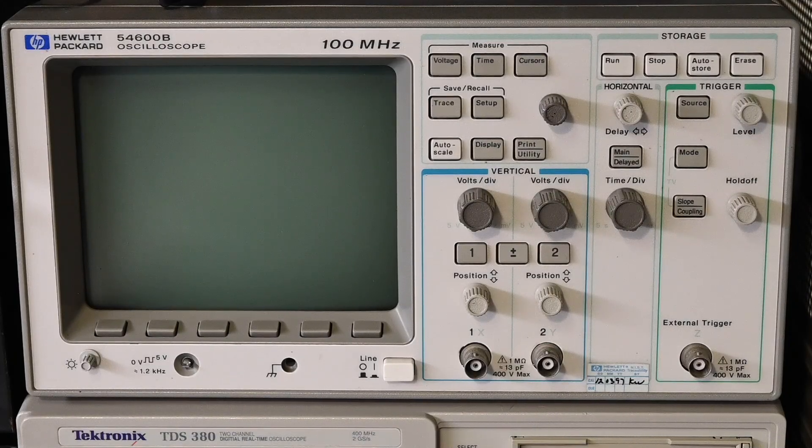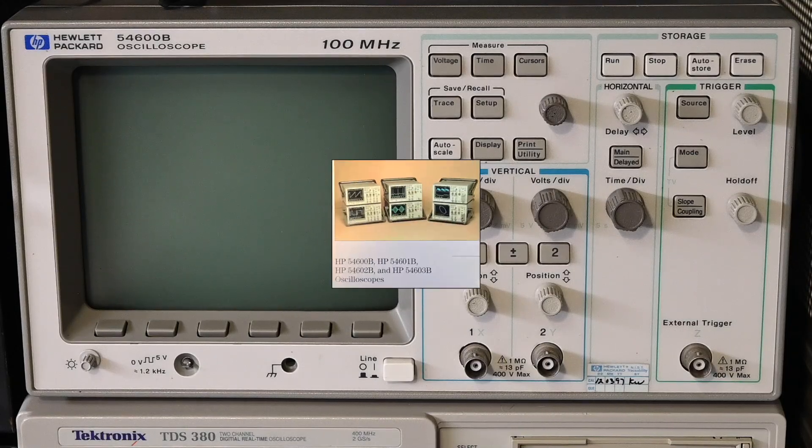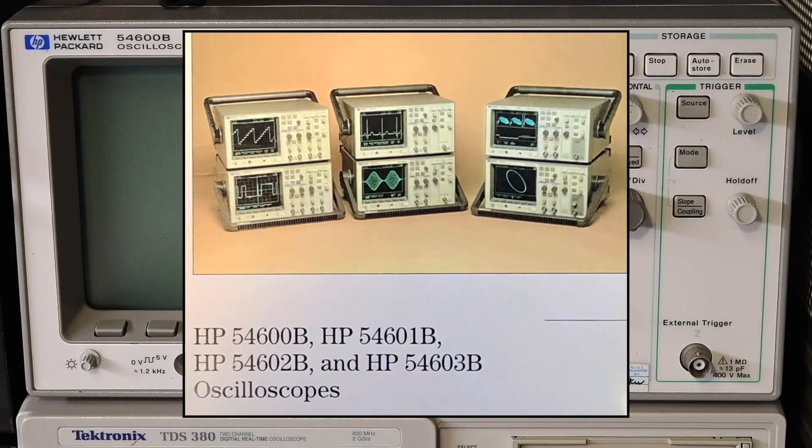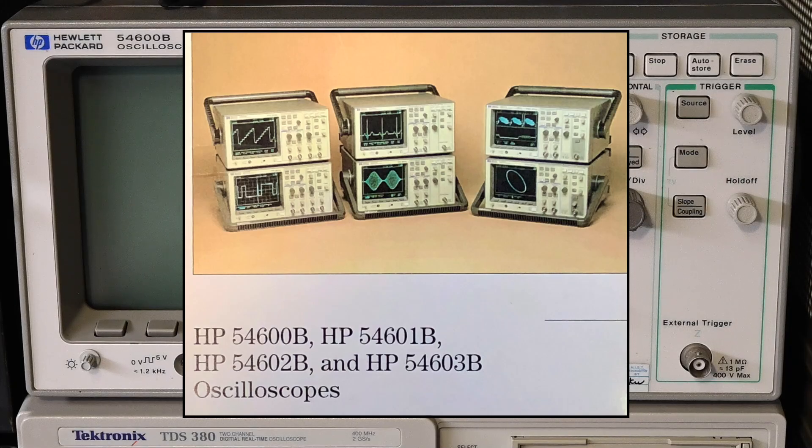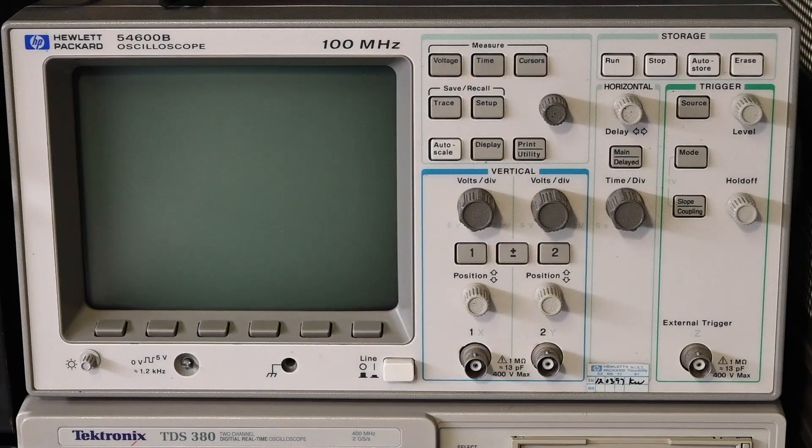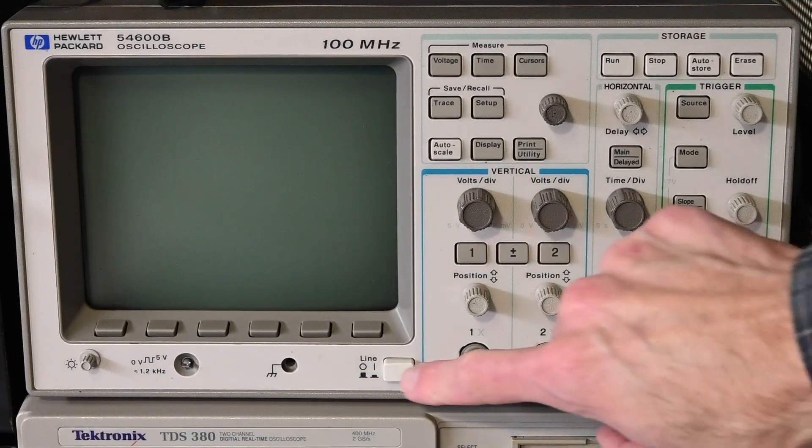It's definitely not documented in the user manual. The 54600B oscilloscope is part of a series of digital scopes that Hewlett-Packard manufactured during the 1990s. All of the scopes in this series look similar, they just have different technical specifications. This particular model is a dual-channel 100MHz scope. I'll go ahead and get it powered up here.